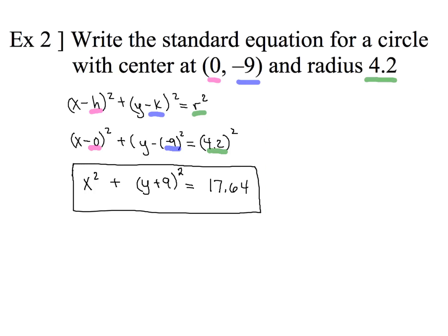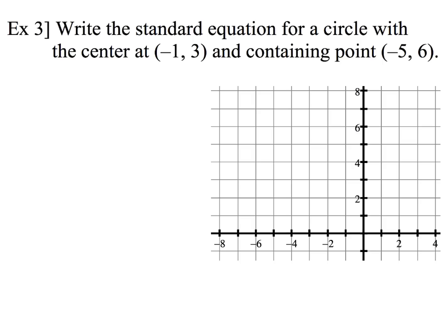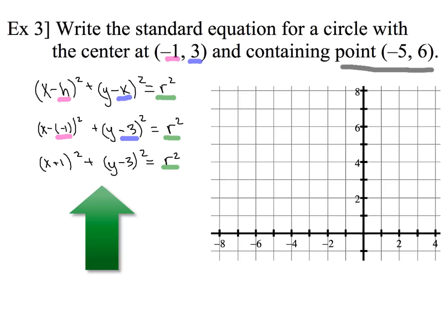All right, we've got two more examples. Now, this next one, example number 3, this one's pretty neat because you can do it two different ways. And I'm going to show you the easier way. We're going to start with some information. Write the standard equation for a circle with the center at (-1, 3) and containing point (-5, 6). So what I want you to do is go ahead. We're going to plug the information we're given about the center into our standard form equation. Now, when we do that, we will end up with (x + 1)² + (y - 3)² = r². Now, the only thing I don't know is just this value for r².